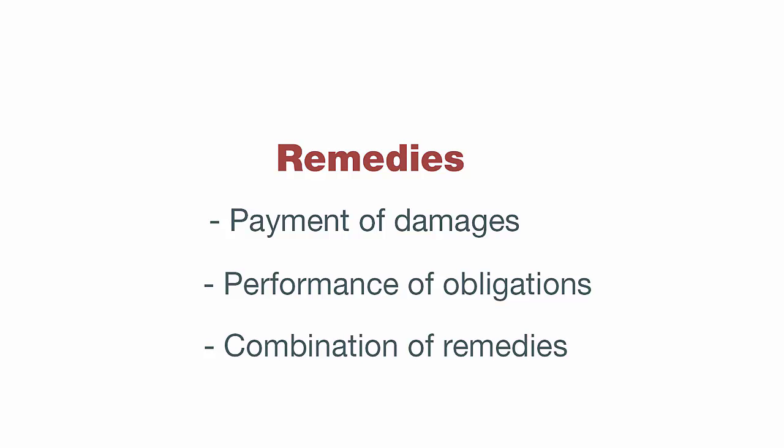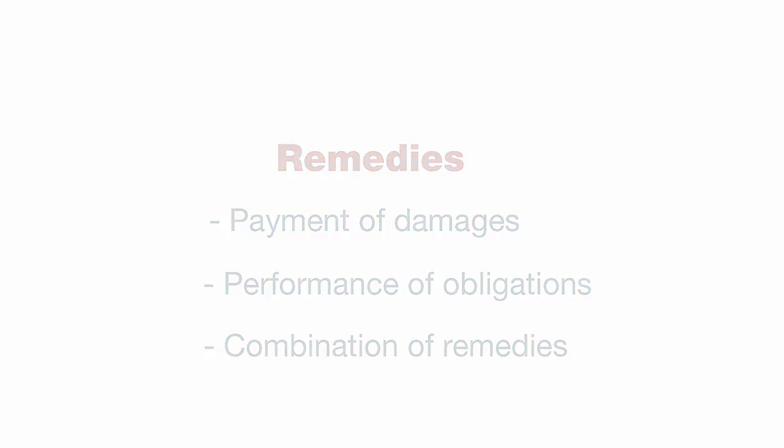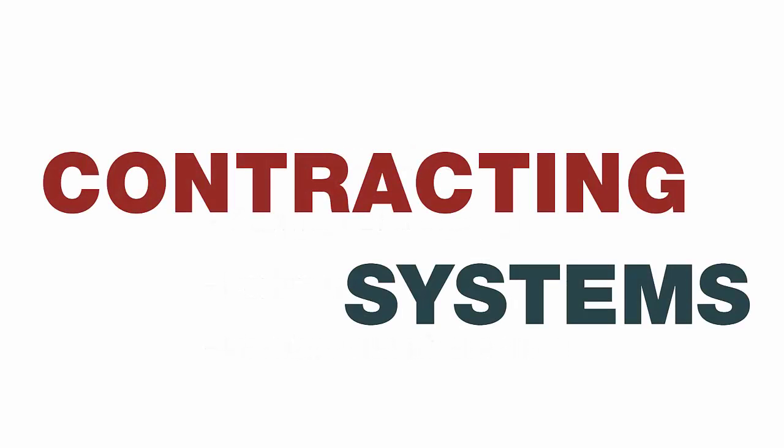So that's an overview of contracting systems — what they are and what they do. In this section of the course, we will study the contracting system known as the Convention on the International Sale of Goods.